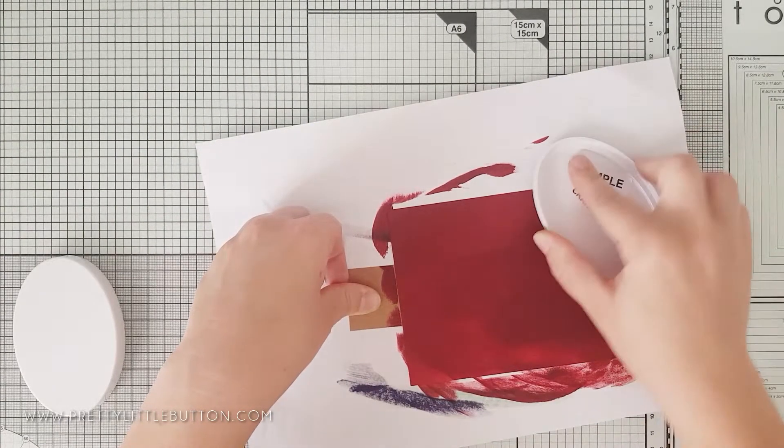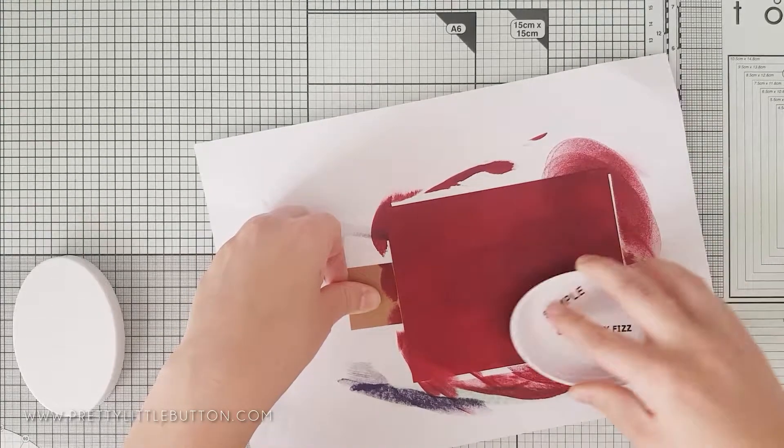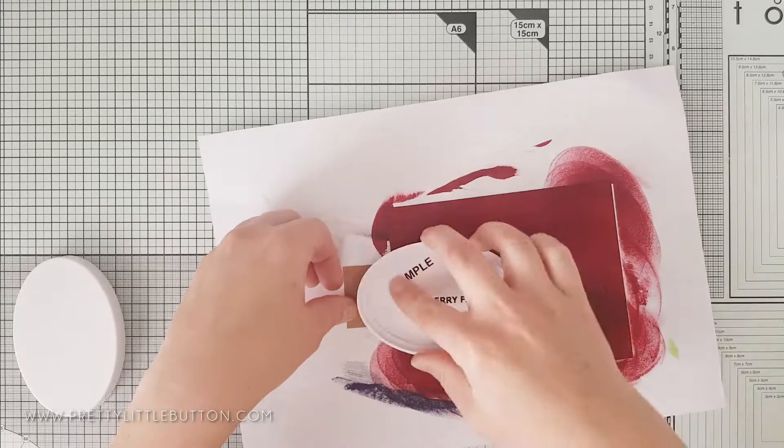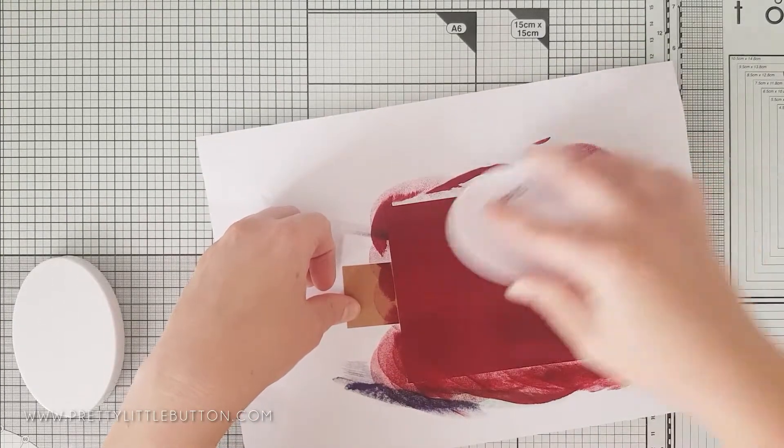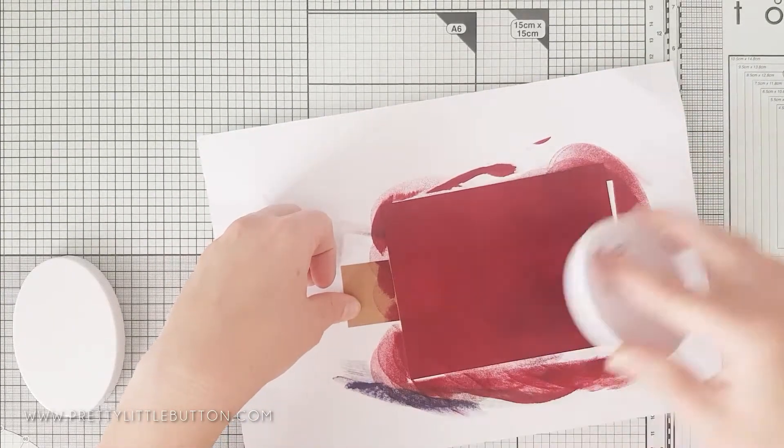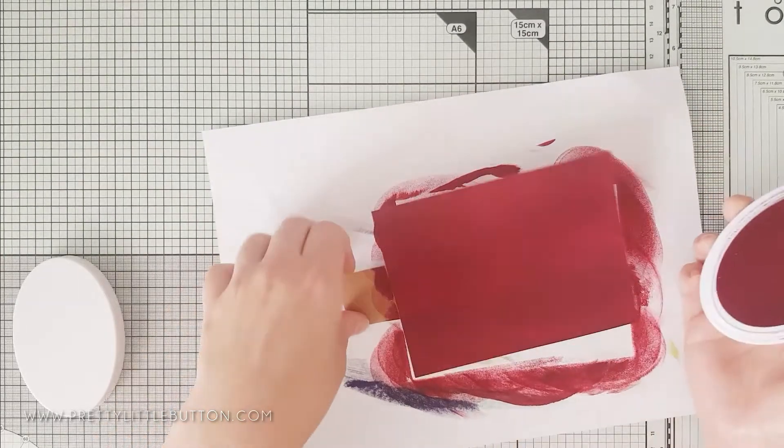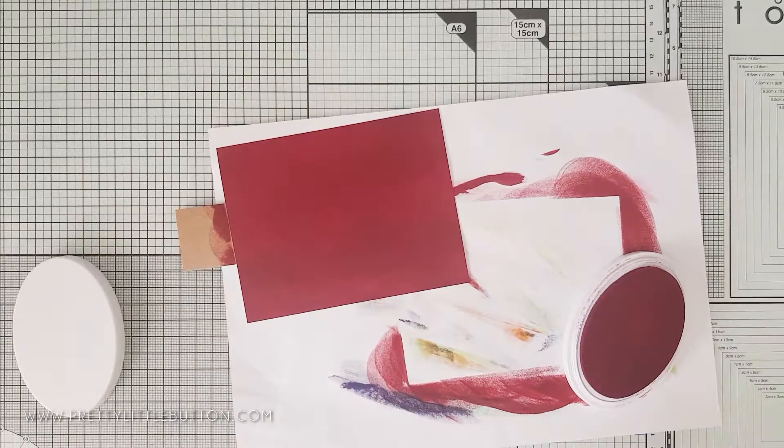I have added a piece of scrap card to the back of my card with some repositional tape to create a handle to reduce my fingers from getting inky. I'm using the direct paper method by just swiping that ink pad over the top to color it.